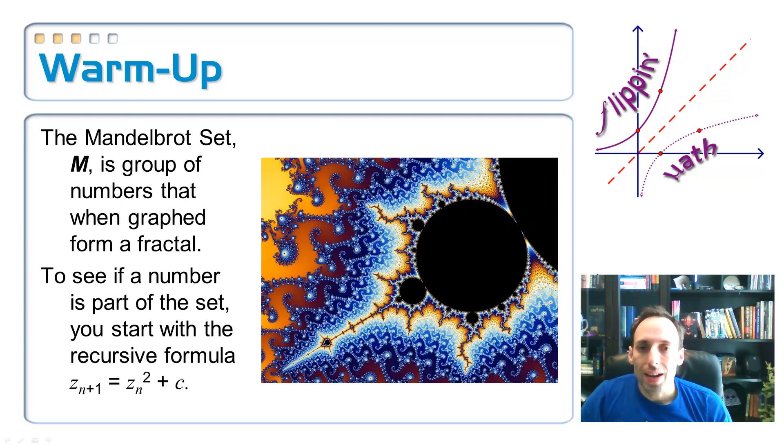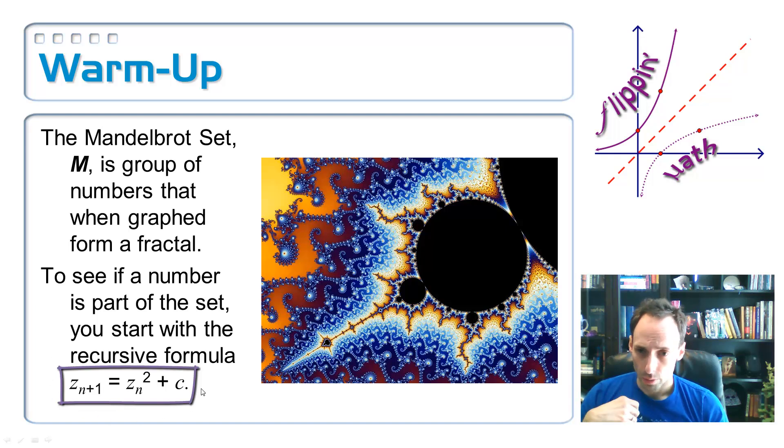So this Mandelbrot set, this set of numbers, whenever you graph it in the complex plane, makes a really super complicated and interesting picture, as you can see right here. So there's a rule involved, a mathematical rule involved, to see if a number is part of the Mandelbrot set or not. And it's called a recursive formula. So a recursive formula uses iteration. Whenever you find an answer, you plug the answer back into the equation again, over and over again. It's very similar to how we were using the Babylonian method to approximate square roots. So to see if a number is part of the set, we're going to use this formula right down here at the bottom. So Z, Z is a complex number. Z sub n plus one is equal to Z squared plus C.